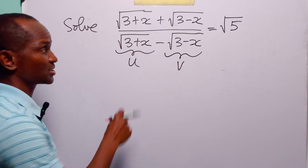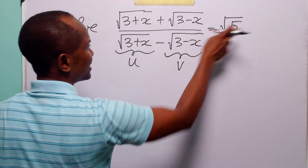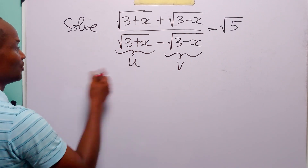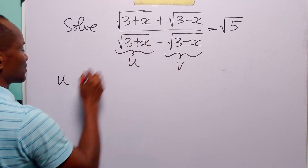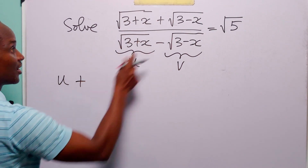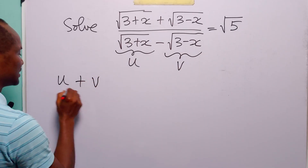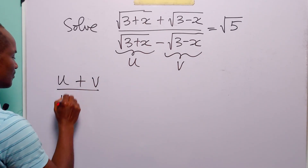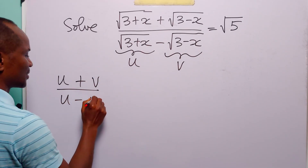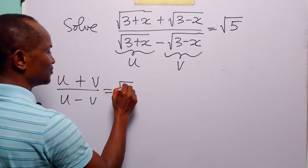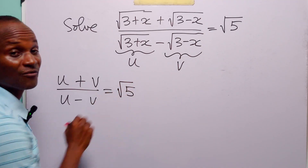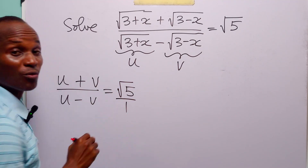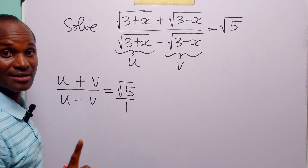With these two substitutions, the original equation can now be written as u plus v divided by u minus v, which is equal to root 5 — or of course root 5 over 1.